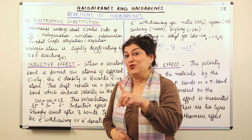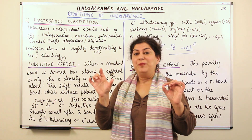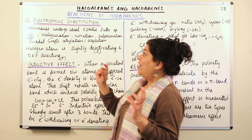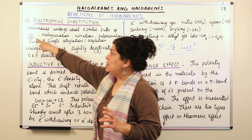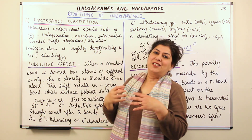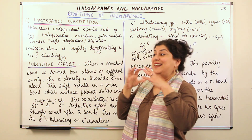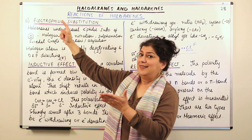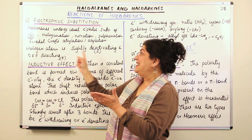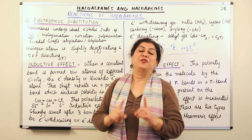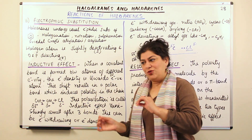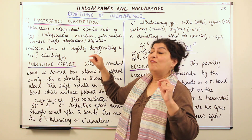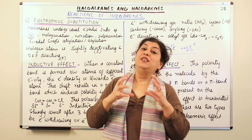Since the halogen is an electron-withdrawing group, it is pulling the electrons away from the benzene ring. Electrophilic substitution — 'electro' means electrons, 'philic' means loving — so an electrophile is a positively charged species that loves electrons. If the halogen is pulling the electrons away from the ring, and the electrophile is coming for those electrons that have already been taken away by the halogen, then the halogen is a deactivating group. It deactivates the ring for electrophilic substitution.